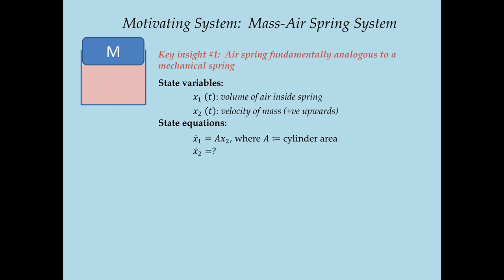The second state equation will take a little more thinking. X2 dot is the rate of change of velocity with respect to time, which is acceleration. We need to use an equation of motion to obtain acceleration in terms of the system state variables. To write down an equation of motion, we need expressions for all forces acting on mass M. One force is gravity pushing the mass downwards, and the other is the force due to pressure from the air spring, so we need to model the pressure from this air spring.